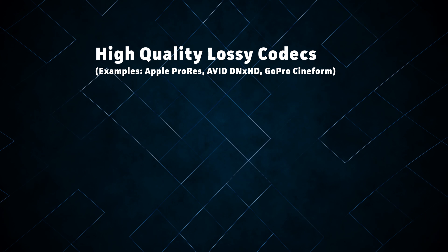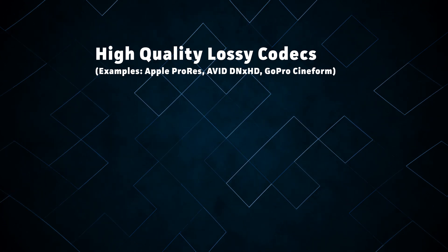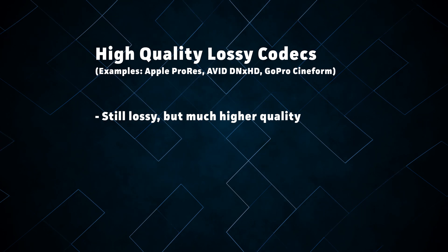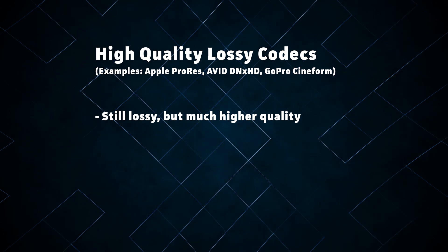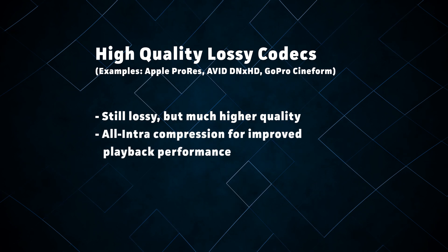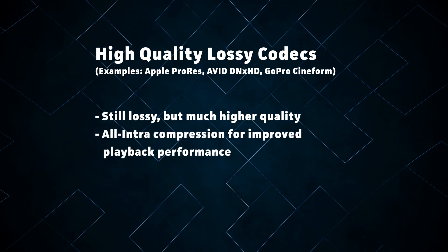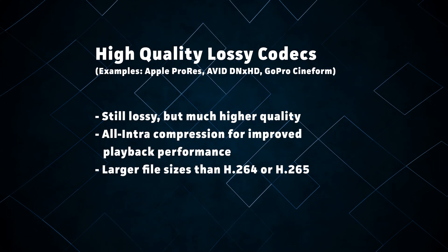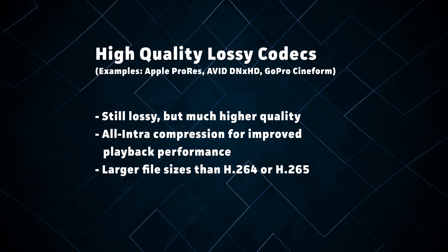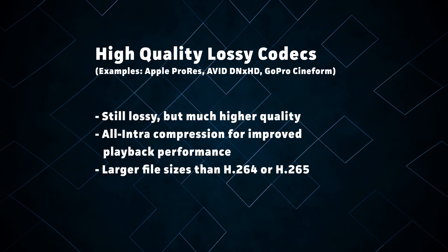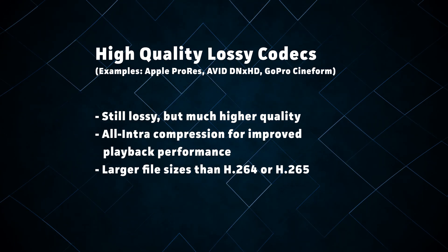Moving up we have the high quality lossy codecs, such as Apple ProRes, DNxHD, and GoPro Cineform. These codecs are designed to maintain a very high degree of image quality, while also delivering a high degree of playback performance. While their file sizes aren't as huge as lossless codecs, they're still too burdensome to stream over the internet, so these codecs are mostly used for high quality image capture on the camera side, or high performance editing on the post production side.